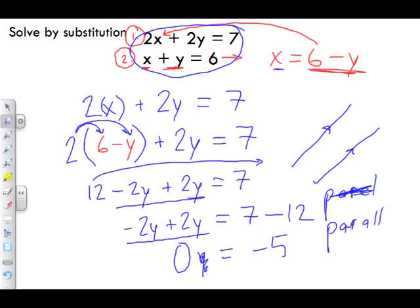We know that the two lines are parallel, and what that means is there is no solution. Two parallel lines will never intersect one another. When zero equals some number other than zero, you have parallel lines. Now let's look at another option.